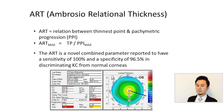It also measures the Ambrosio Relational Thickness, the ART. It is the relation between the thinnest point and also the pachymetric progression indexes. The ART is a combined parameter reported to have very high sensitivity and specificity in discriminating keratoconus from normal cornea.